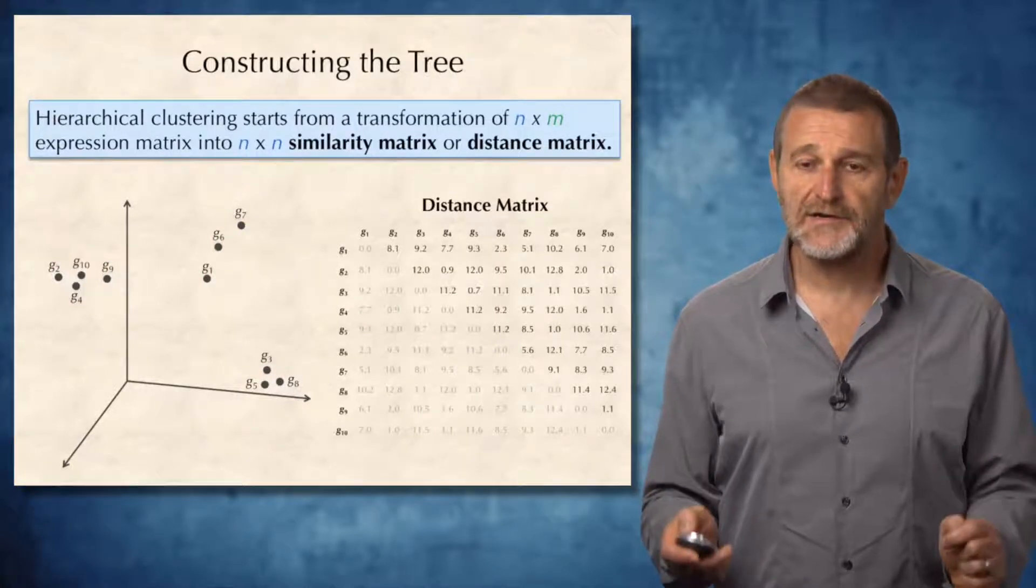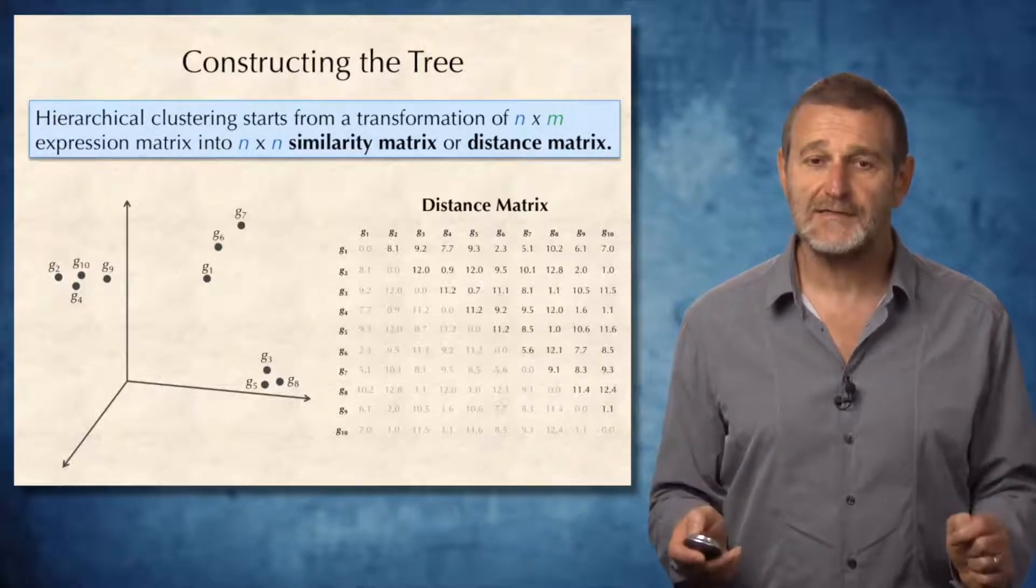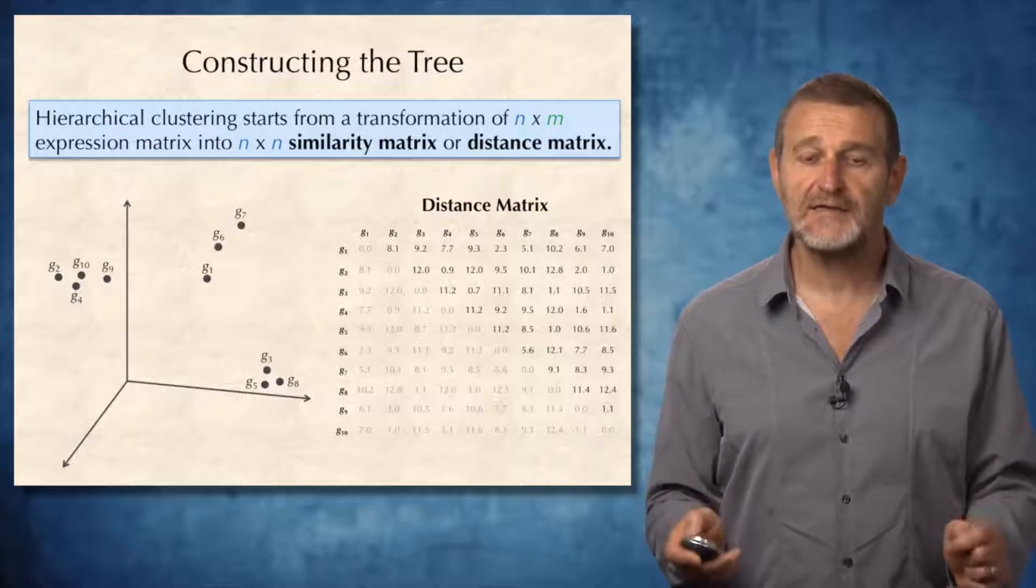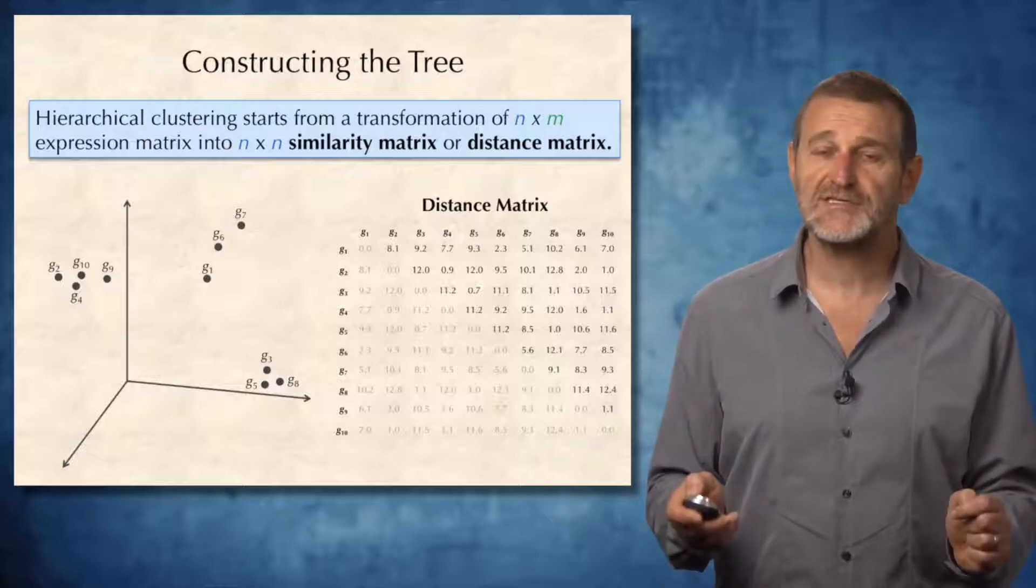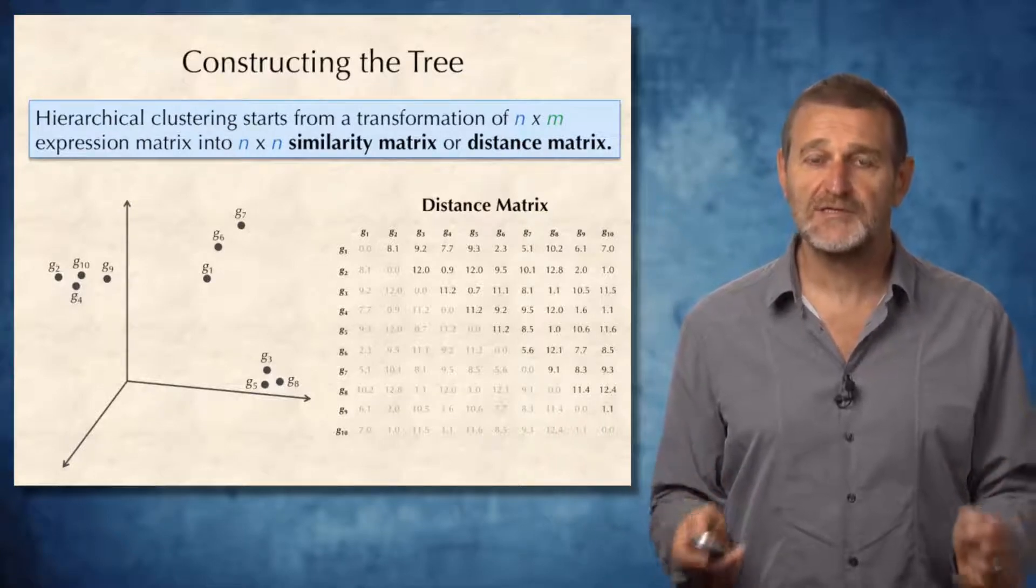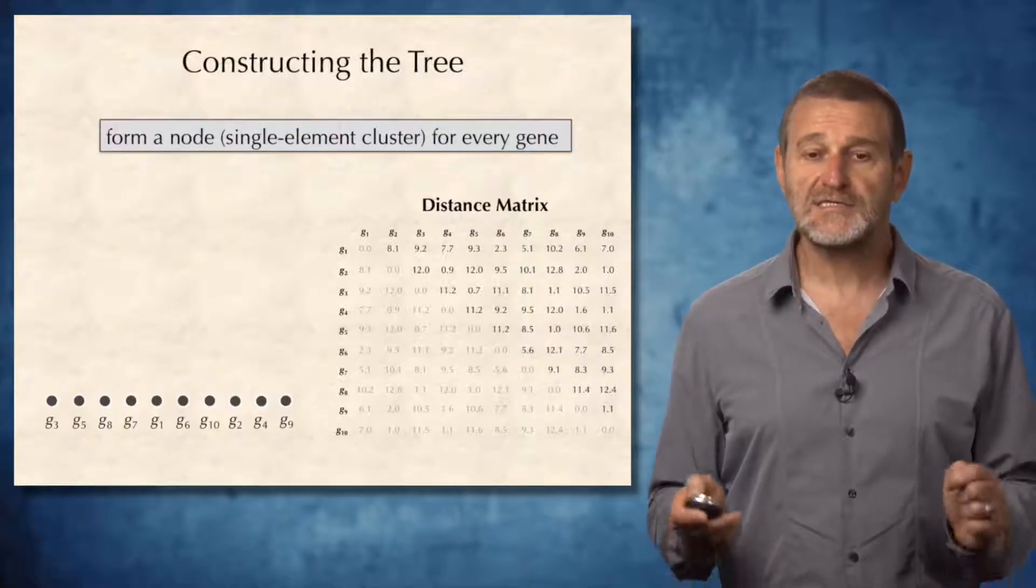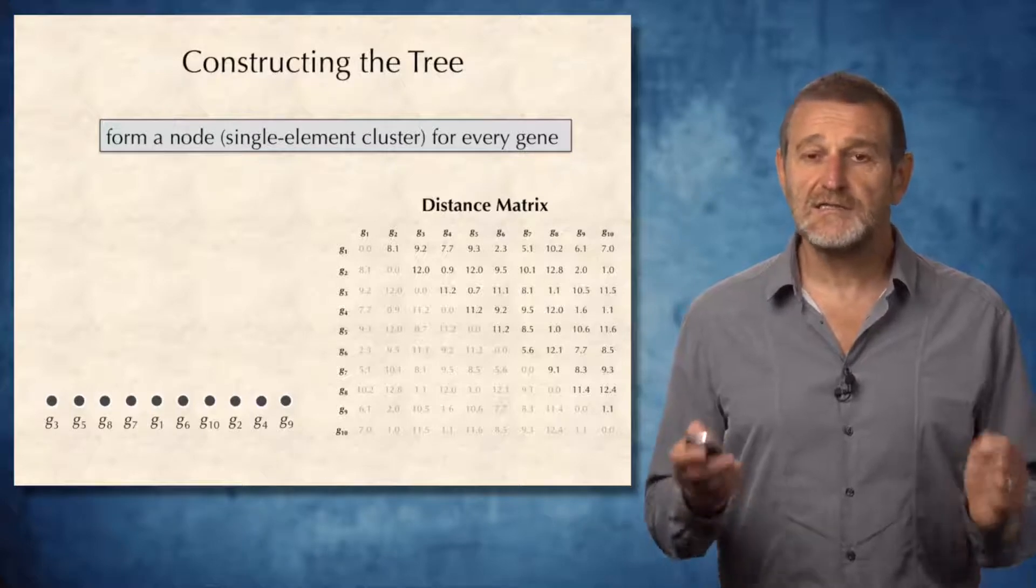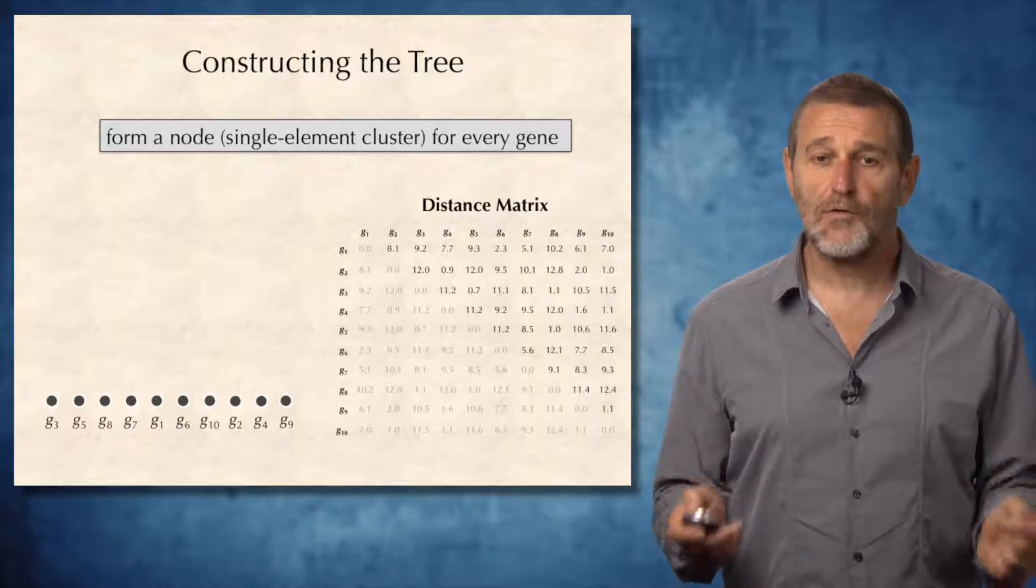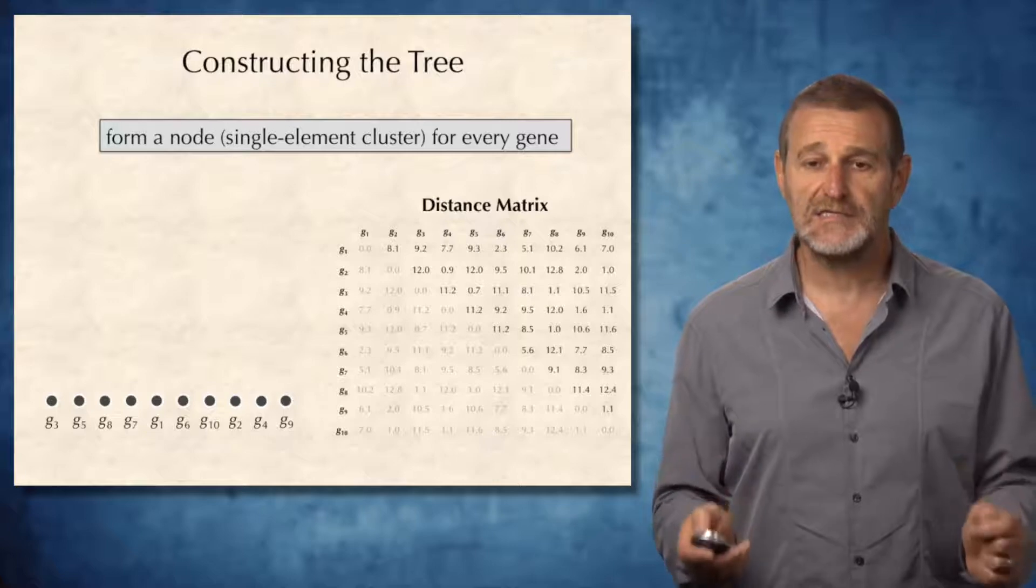To construct the hierarchical clustering trees, biologists first transform data N times M expression matrix into N times N similarity matrix or distance matrix. For example, they can construct the distance matrix by simply computing the Euclidean distances between the points in the dataset. As soon as this matrix is constructed, the hierarchical clustering algorithm starts from just representing all data points as leaves in a tree that is to be constructed.